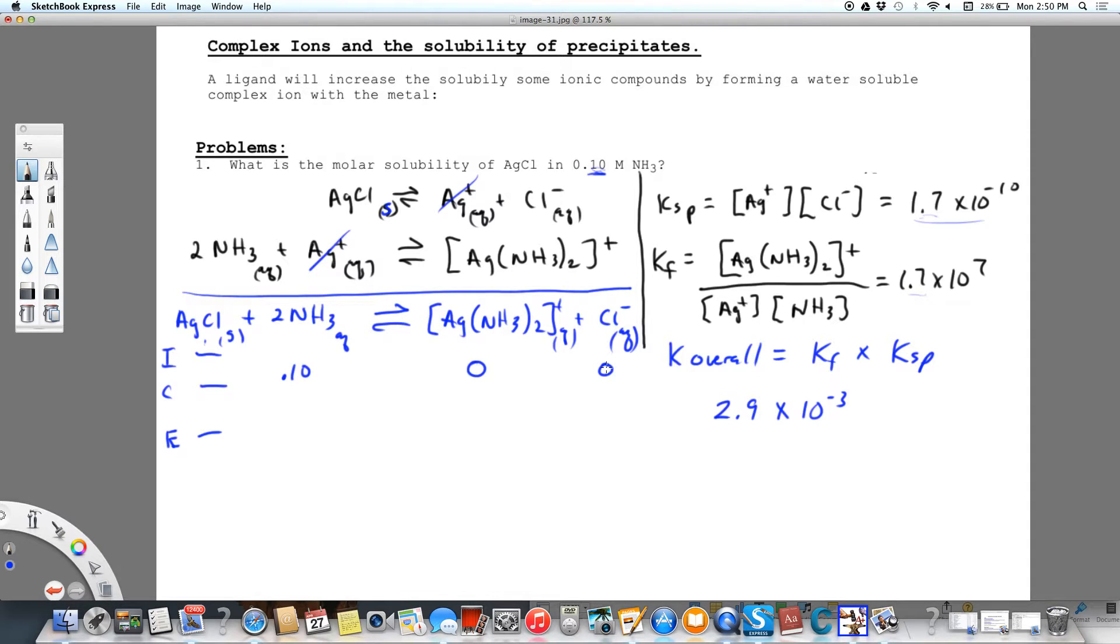Therefore the change: these two have to go up. We're going to say they're going to go up plus x. They can only go up because they started at zero. And if these both go up x, we've got a 2 here. This is going to go down minus 2x. So now I'm going to add these equations together. I get 0.10 minus 2x for my ammonia, and I get x and x for the complex and for chloride.